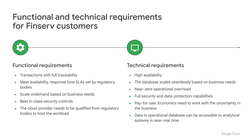Now let's talk about the scalable architecture with Spanner, using a FinServ customer use case. On the functional side, customers want transactions with full traceability, and they want to meet availability requirements and SLAs set by their regulatory bodies. They want scaling on demand and to pay for what they use. They want best-in-class security controls, and the cloud provider should be qualified by their regulatory body. On the technical side: high availability, near-zero operational overhead, the ability to seamlessly scale based on demand, and availability of operational data in real-time and analytical systems to drive insights.